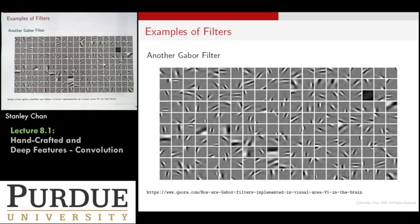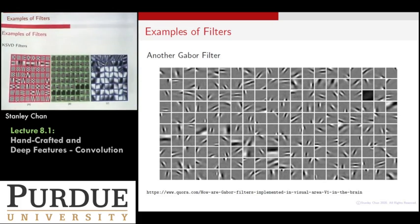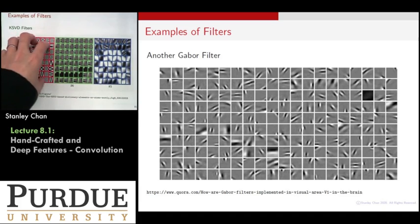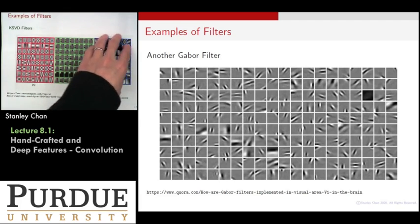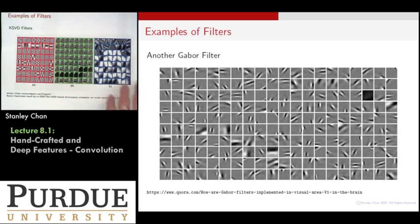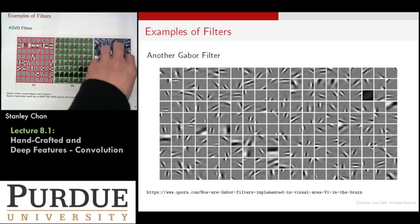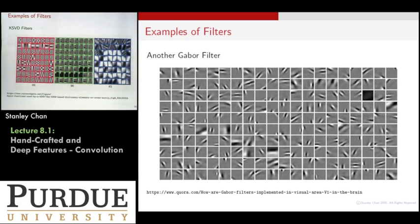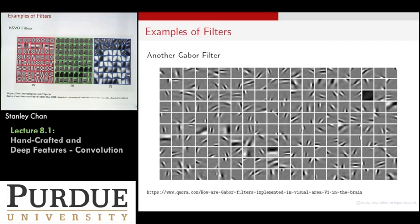There are more filters. This is called the KSVD filter. You can have very low resolution, low-scale filters, and then much higher-level scale filters. By filtering the image using different filters, you get different responses, so you can have a hierarchy of different responses.